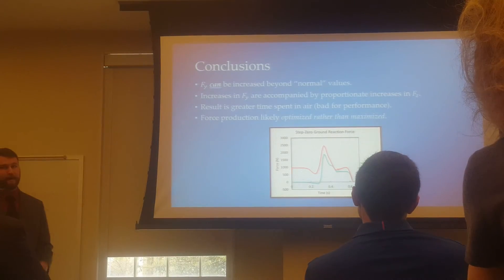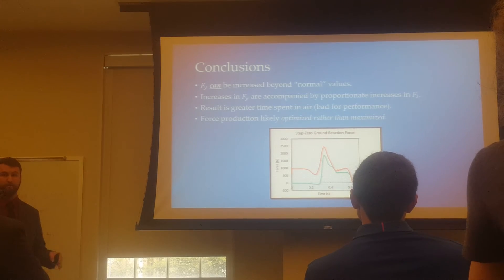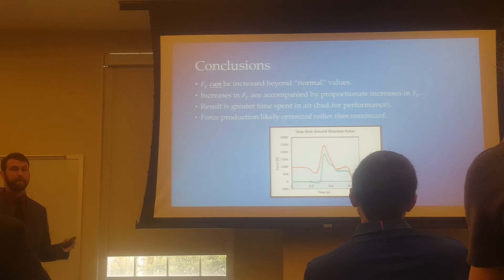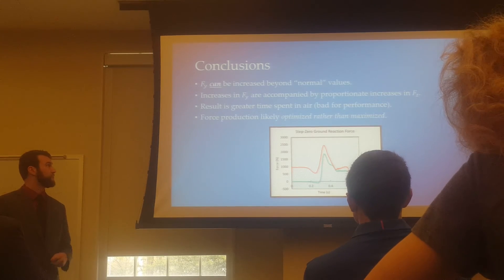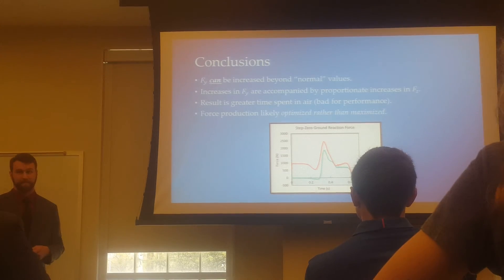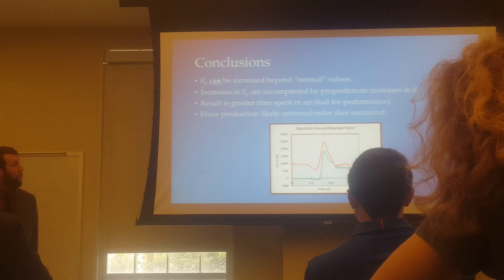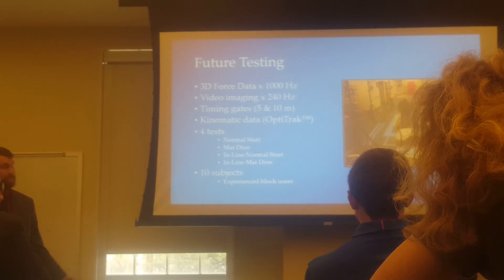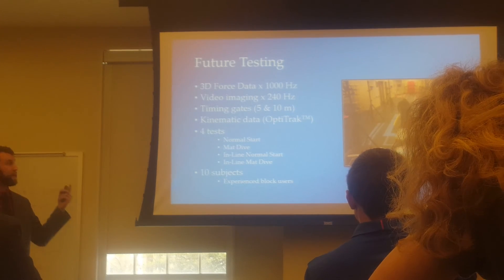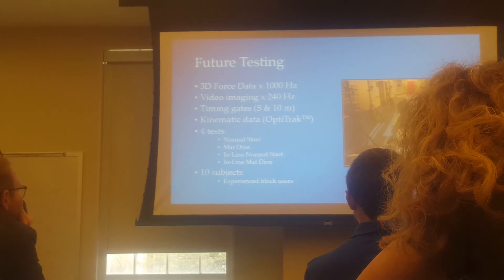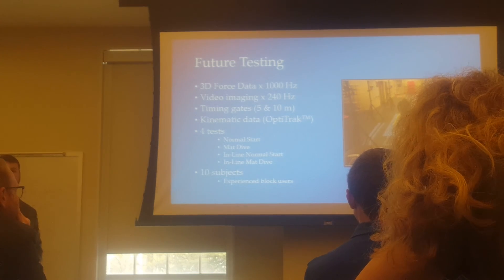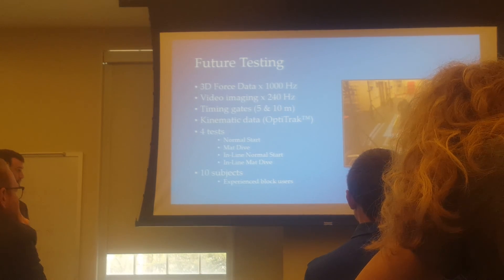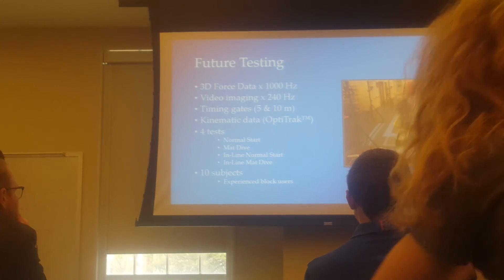So, conclusions: what we're finding so far is that horizontal force can be increased beyond the normal track condition, but increases in horizontal force are accompanied by proportionate increases in vertical force, so you don't fall flat on your face. That results in greater time spent in the air, which is adverse to performance. Therefore, force is likely optimized rather than maximized during normal track conditions. For future testing, we'd like to continue with those four tests using the same three-dimensional force data and slow-motion video imaging, add kinematic data for a deeper dive into joint angles and where the GRF is directed relative to the center of mass, and ideally recruit up to ten experienced block users.